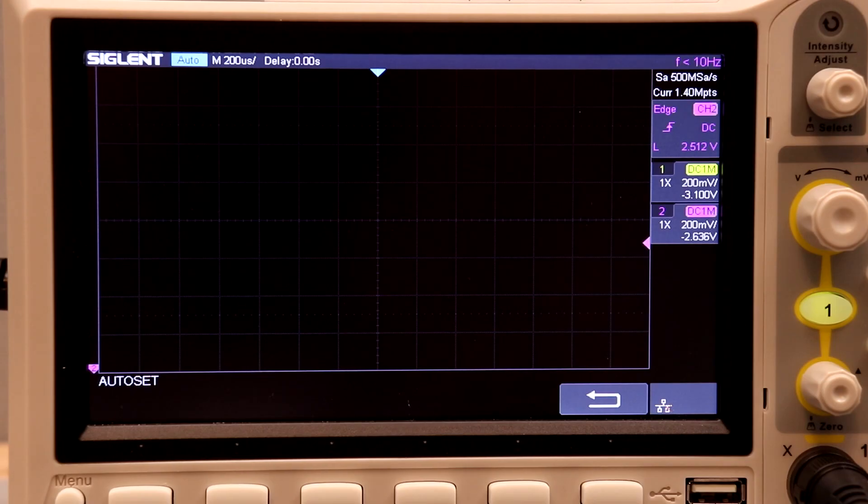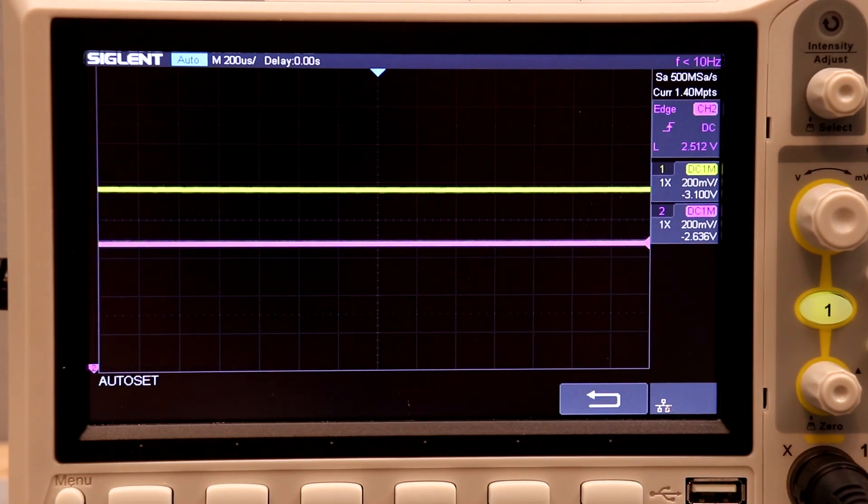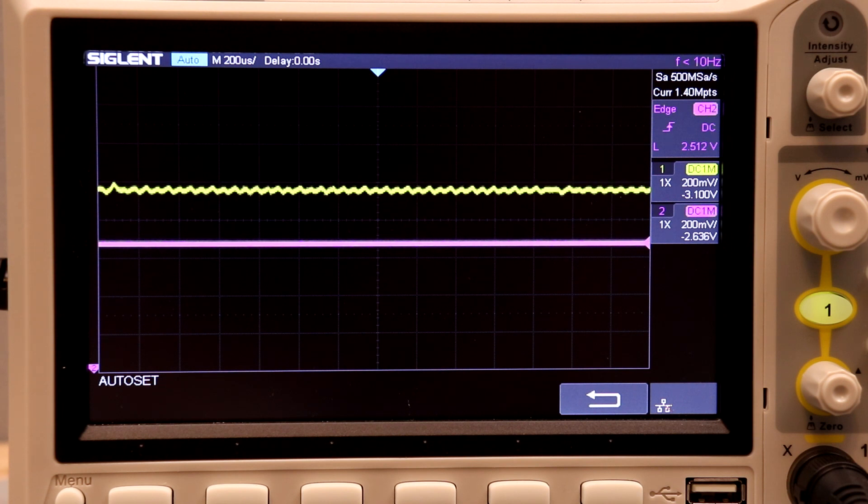As an example of that, here's the 3.3 volt line during boot up. What this means is that there's a lot of noise on the 3.3 power line. And since it powers the PWM pins, you're going to hear every bit of that noise on your speakers.